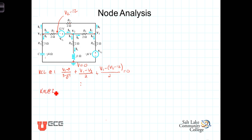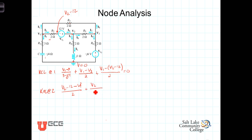Now KCL at node 2. The current leaving this node going to the left will be the voltage (V2 minus 12) minus V1, divided by 2 ohms. The current leaving this node coming down is V2 divided by the impedance of 2 plus j. And then the current leaving node 2 going to the right will be V2 minus V3 divided by 2 ohms. The sum of those three currents equals zero.